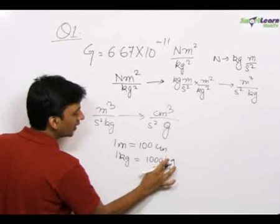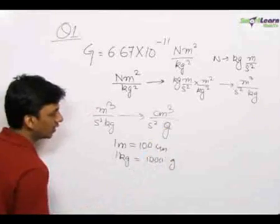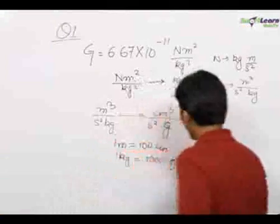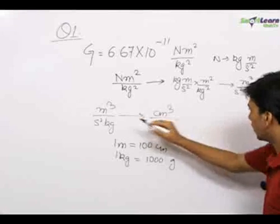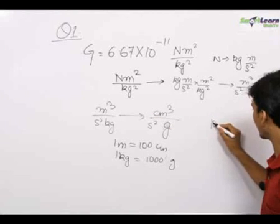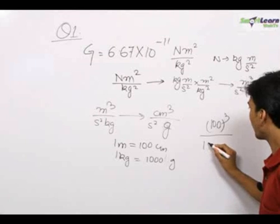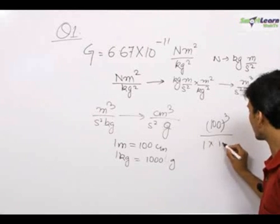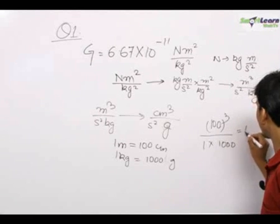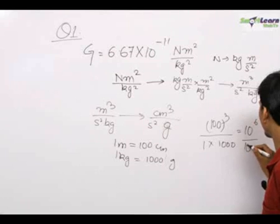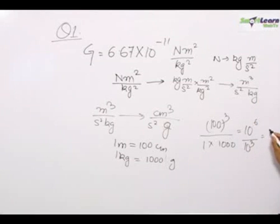So when we feed in the conversion in this equation, we get that 1 meter equals 100 centimeters. That means we get 100 to the power 3 upon 1 into 1000. So we get 10 to the power 6 upon 10 to the power 3, that equals 10 to the power 3.